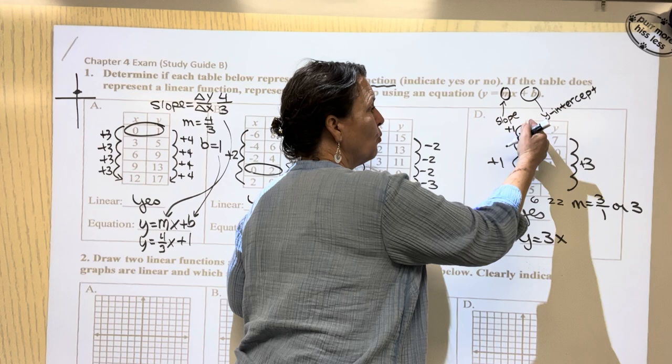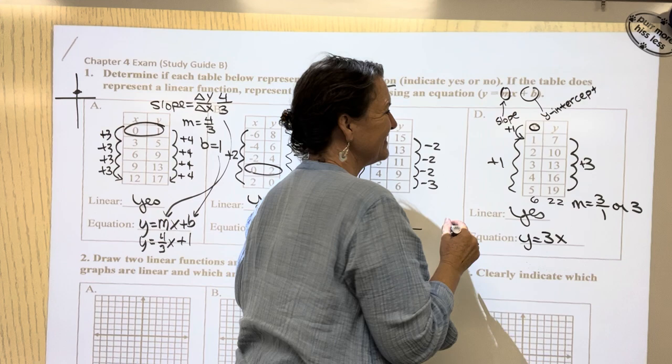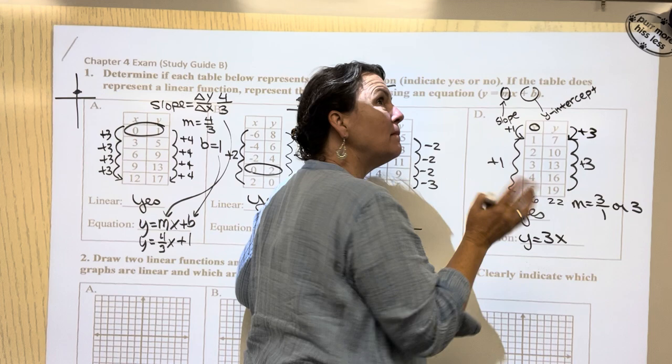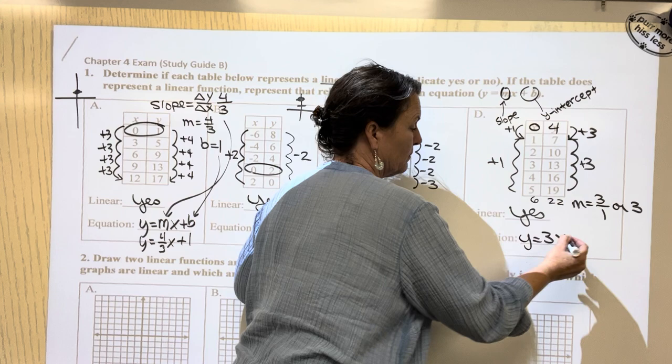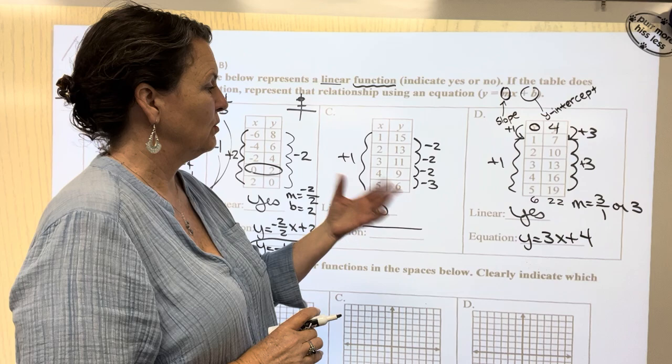So I need to know what number plus one would give me one. Ooh, there's my zero. I got it. And what number plus three would give me seven? What mysterious number, if I add three to it, is going to give me seven? It's going to give us four. And we have our beautiful equation now. So we now have the first problem done. Let's look at problem number two.